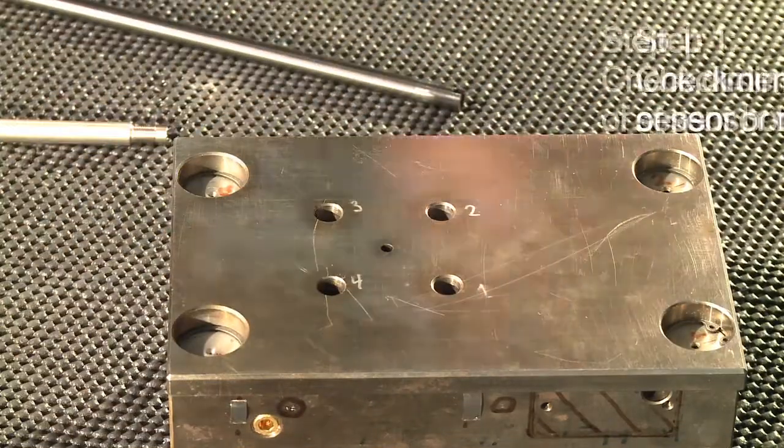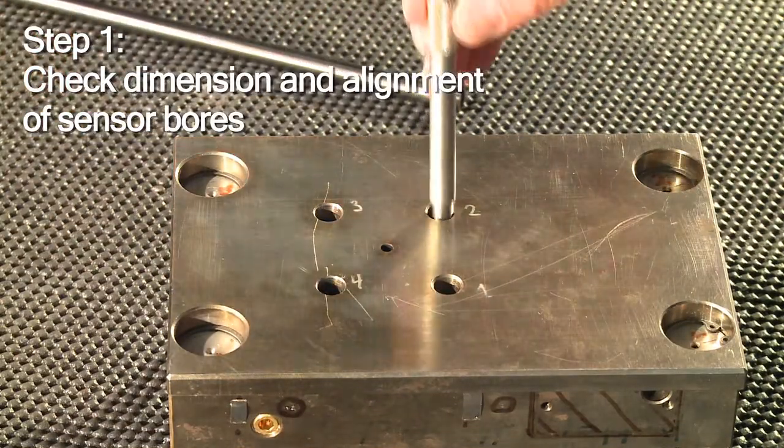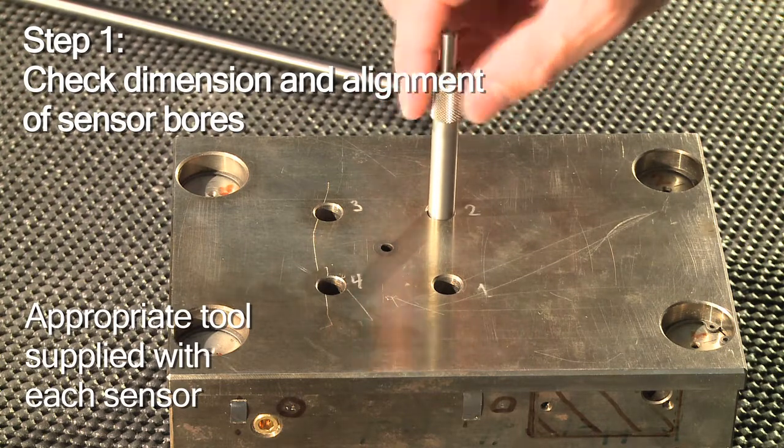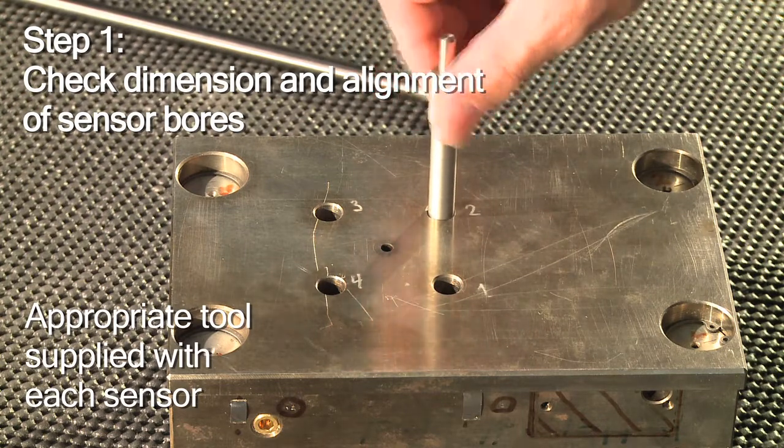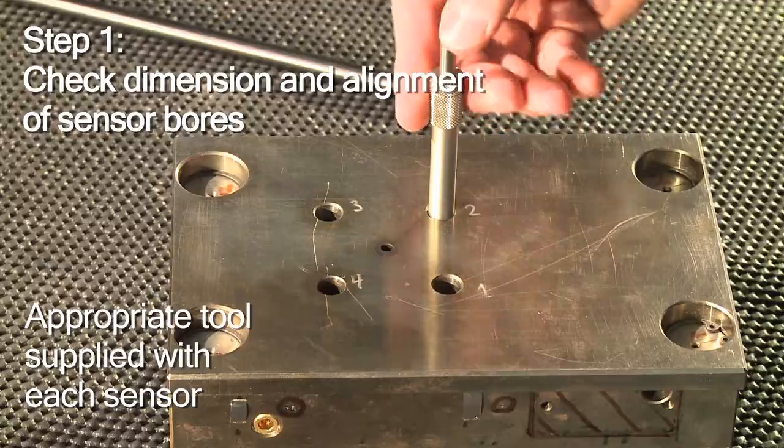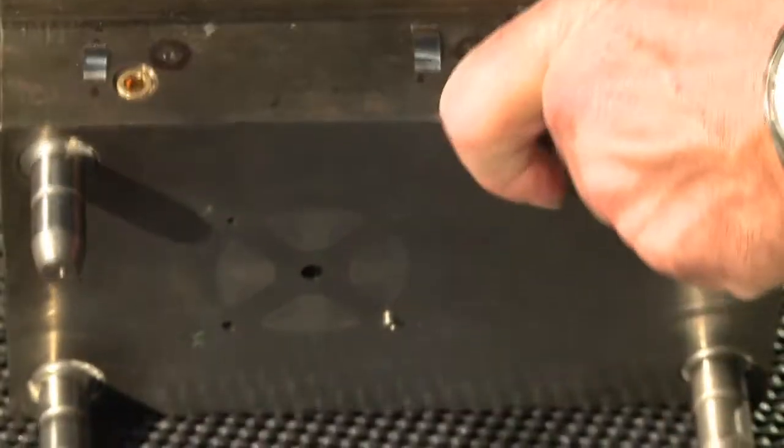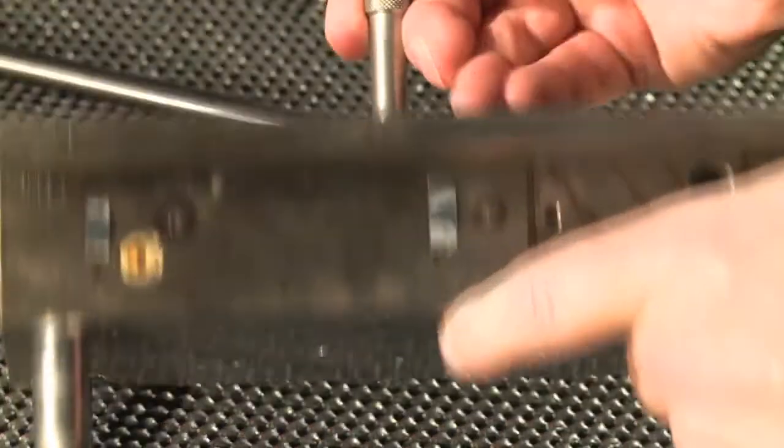The first step is to check the sensor bores using the special checking tool. Kistler provides a tool for each sensor type and mounting method. Here the bores are perfect and you can continue.